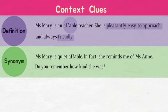In this sentence, we can see that a comparison is being made between two people, Ms. Mary and Ms. N. The author is saying that Ms. Mary and Ms. N both have the same quality. We don't know what affable means, but we can see that the word 'kind' has been used to describe Ms. N. So this way, we can guess that affable is a synonym for the word kind.